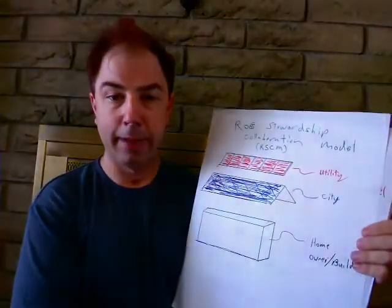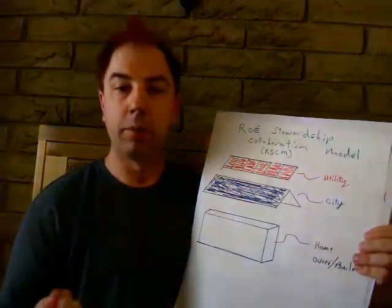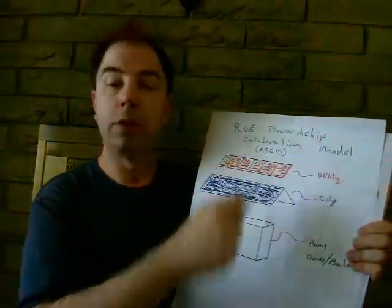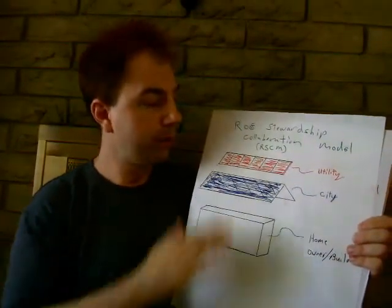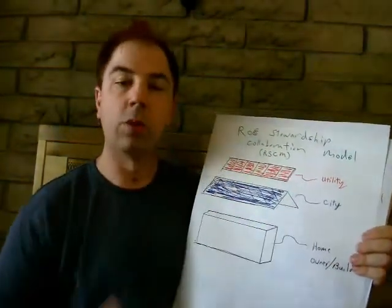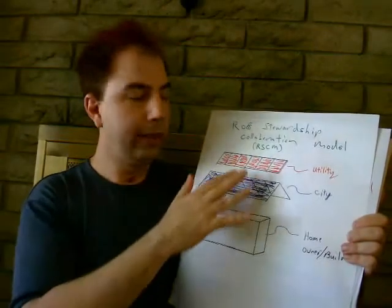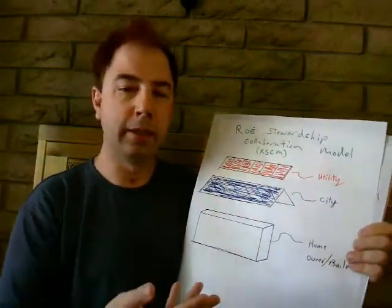So how might you make it happen? Well, that's the other part of my concept, which is the roof stewardship collaboration model. In this model, the utility, the city, and the homeowner all work together. The utility and the city are chipping in because they're going to get something considerably back.